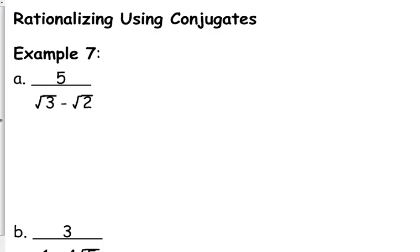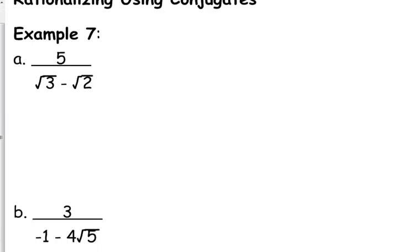Now, they don't necessarily both have to be square roots. Sometimes they're both square roots. The next example we're getting ready to do, one of them is the square root, one of them is not. But if there is a plus or minus in that denominator and one of those terms is the square root, we still don't want to leave that square root in the denominator. So here is how we rationalize problems like this.